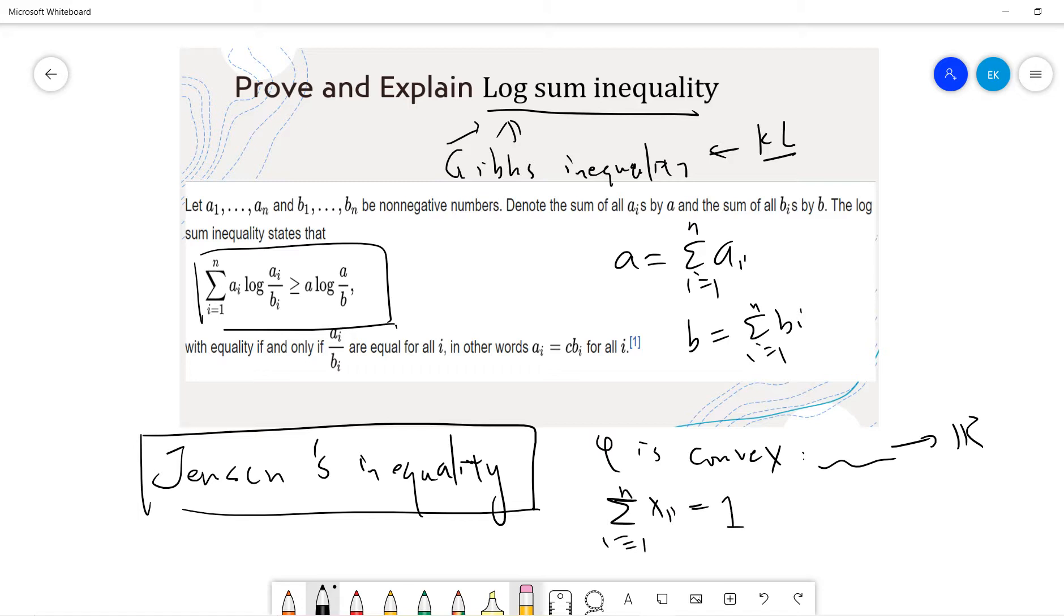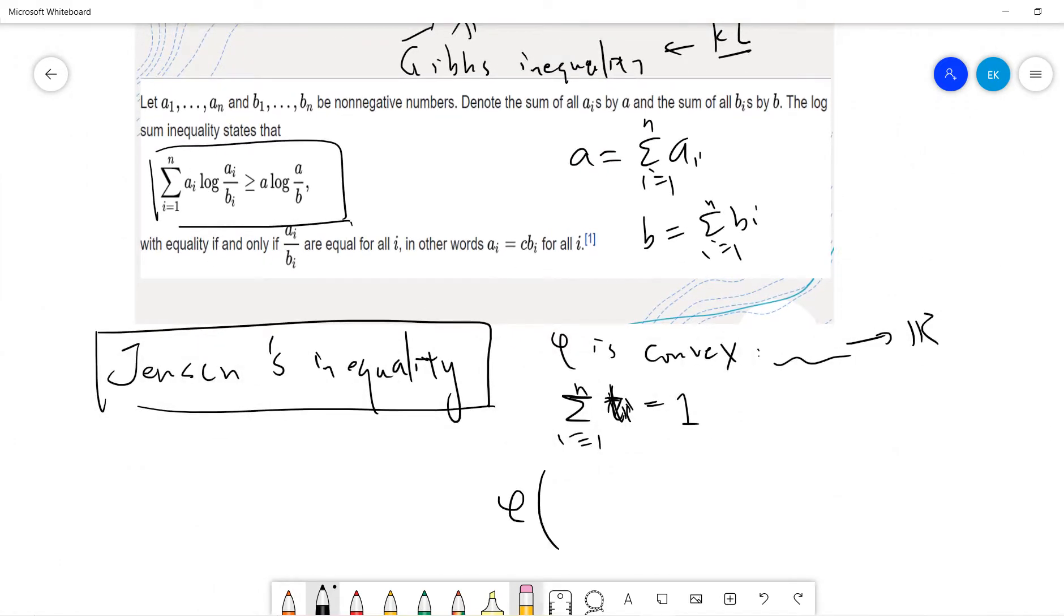And you have, let's say, ti. So ti is a positive number, sum from i=1 to n is 1. Then the Jensen's inequality says that if you take convex with sum ti xi from i=1 to n, this will be less or equal to sum ti phi(xi) from i=1 to n.